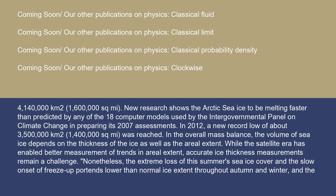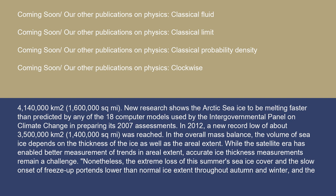In 2012, a new record low of about 3,500,000 square kilometers (1,400,000 square miles) was reached. The volume of sea ice depends on the thickness of the ice as well as the aerial extent. While the satellite era has enabled better measurement of trends in aerial extent, accurate ice thickness measurements remain a challenge. Nonetheless, the extreme loss of summer sea ice cover and the slow onset of freeze-up portends lower than normal ice extent throughout autumn and winter, and the ice that grows back is likely to be fairly thin. As more and more of the sea ice is thinner first-year ice, the greater effect storms have on its stability, with turbulence resulting from major extratropical cyclones resulting in extensive fractures of sea ice.